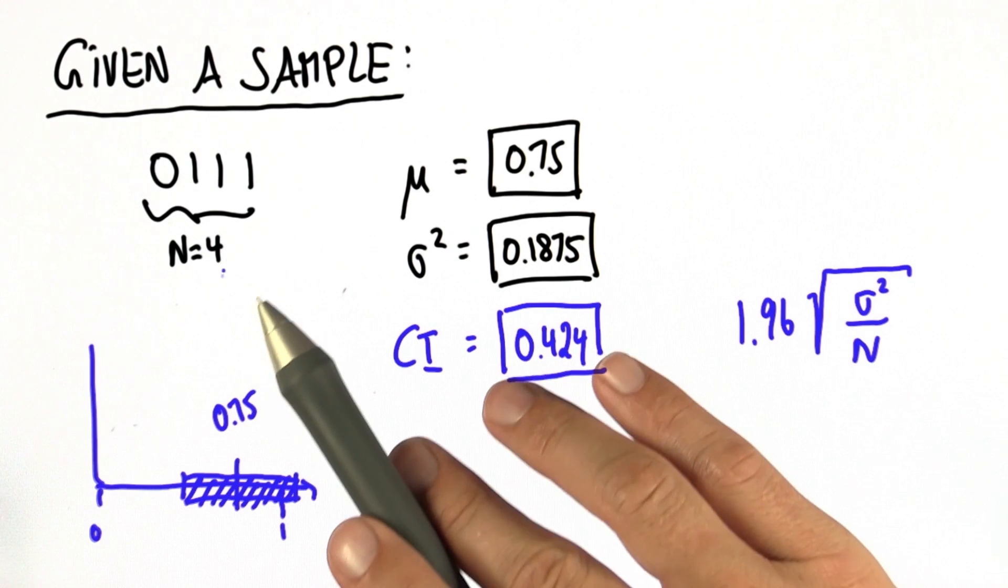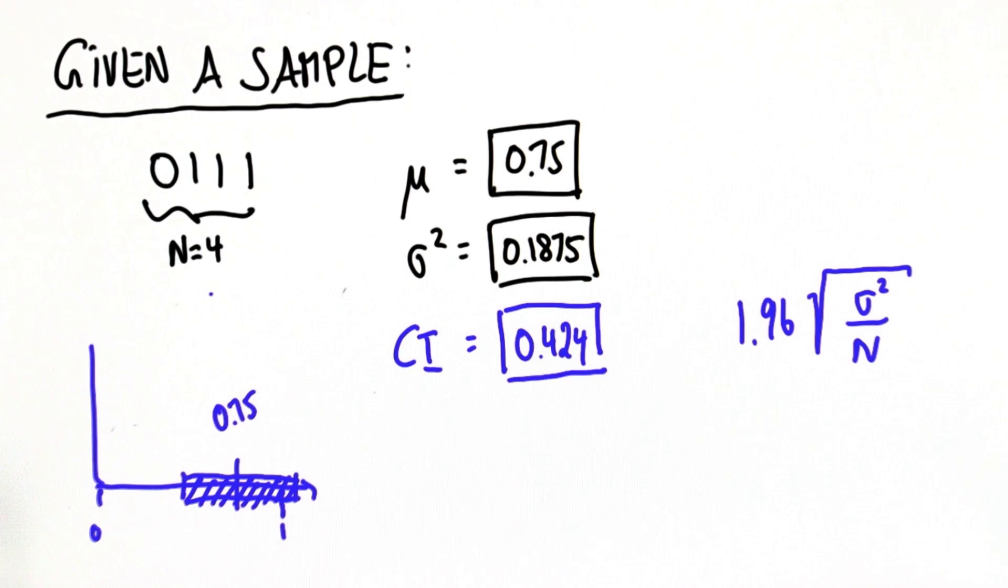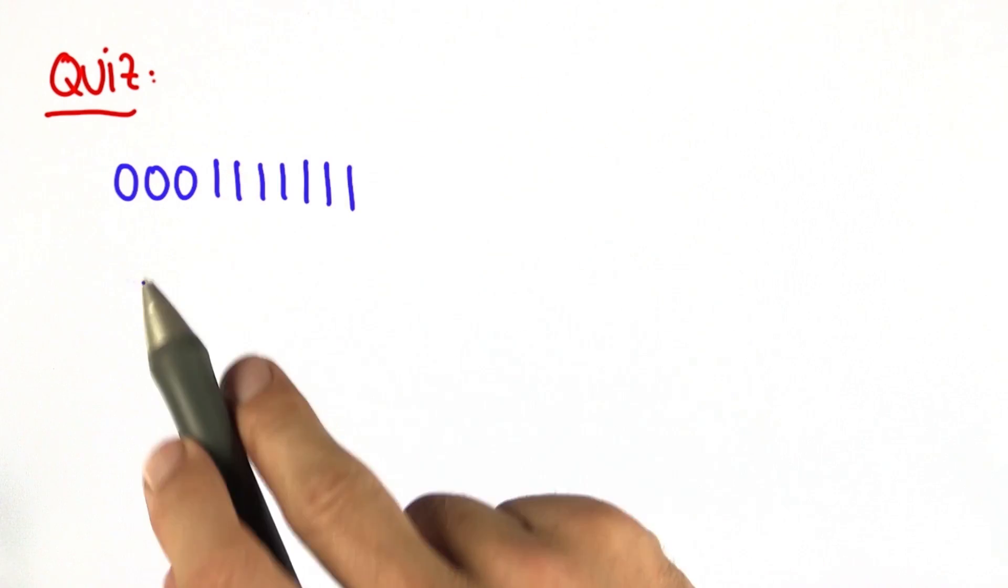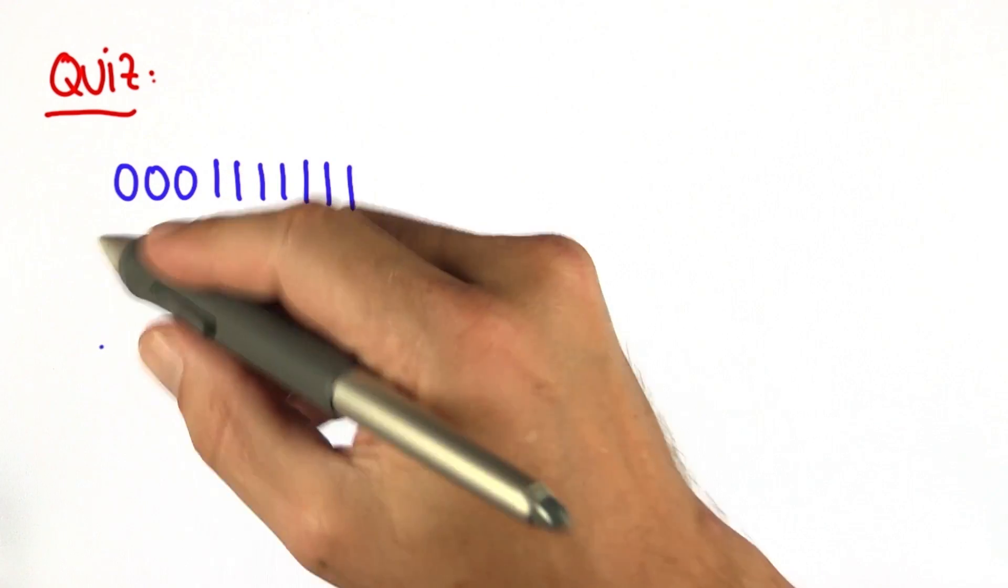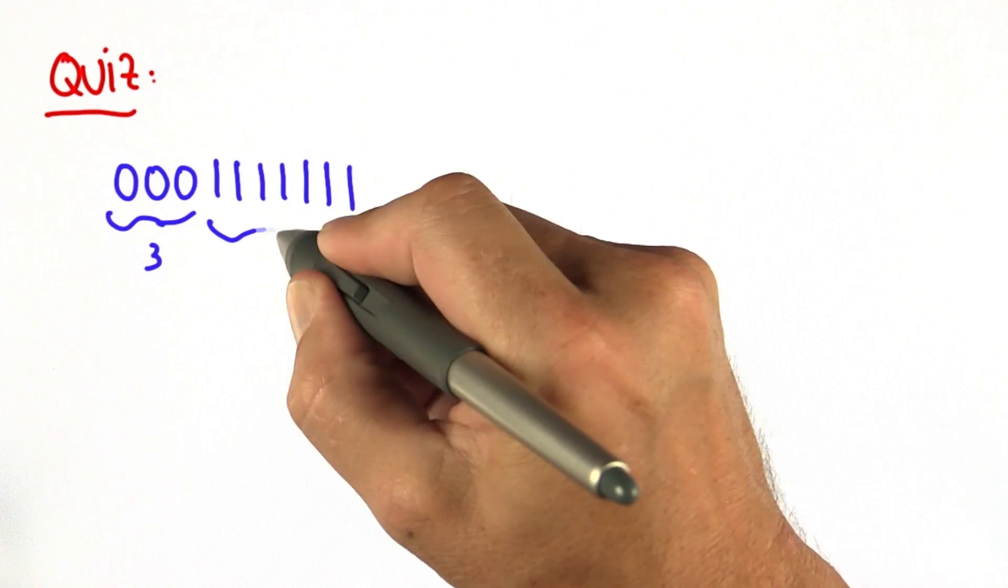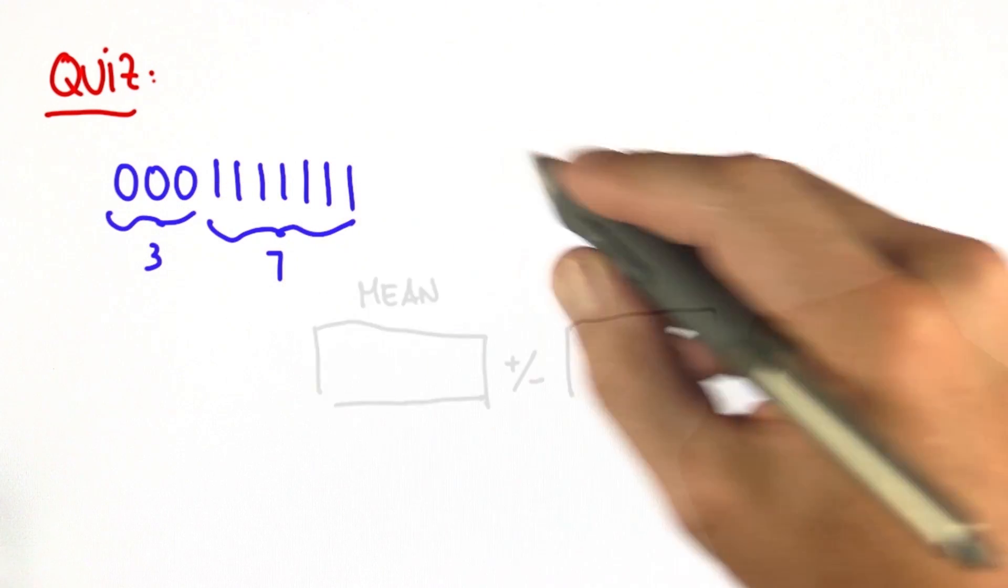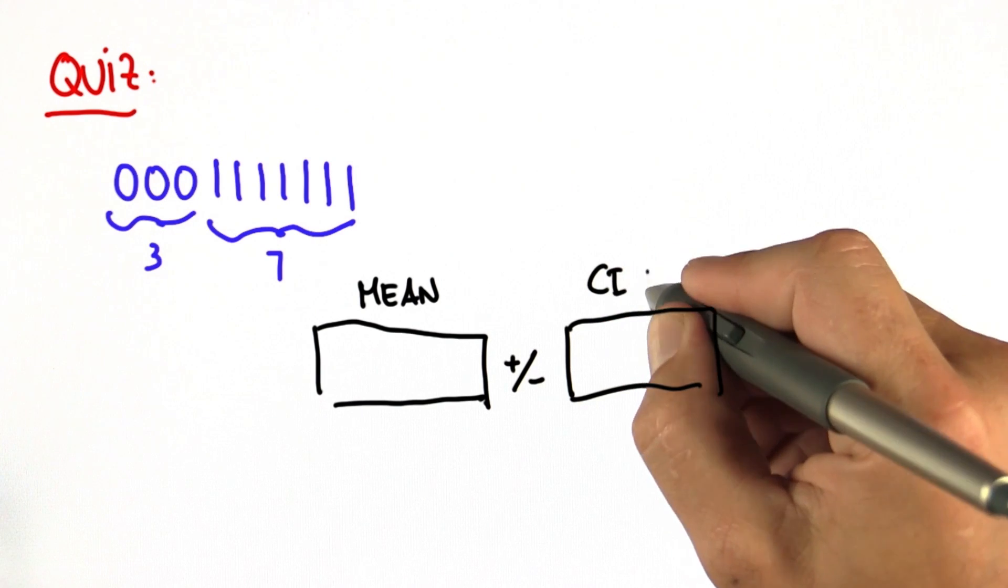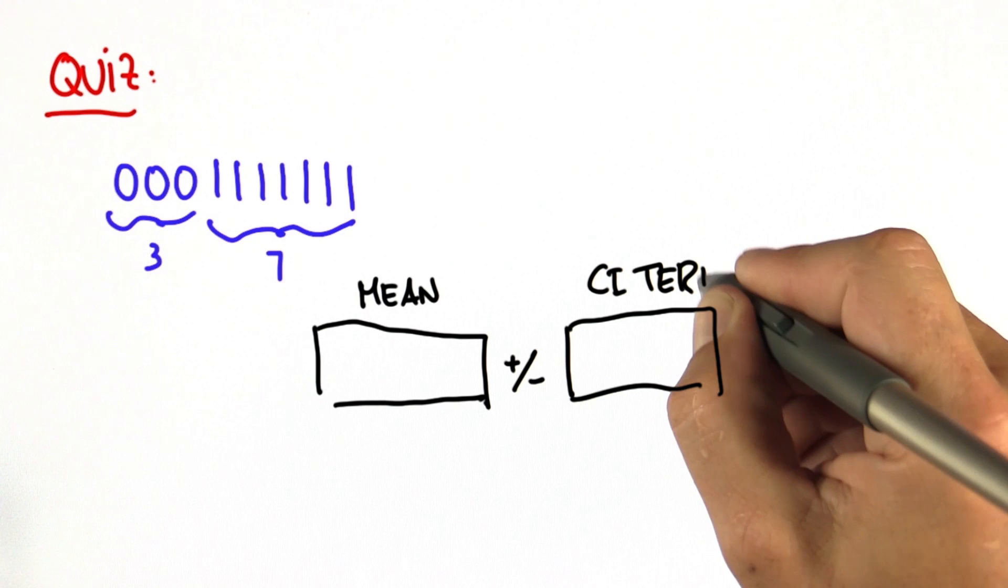Obviously, it's a small sample. So let's do the same thing for a larger sample. And this one is a quiz for you. So here's the sample. I've ordered it. There's three tails and seven heads. And I want you to just compute for me the mean plus minus this confidence interval term. So please give me both numbers.